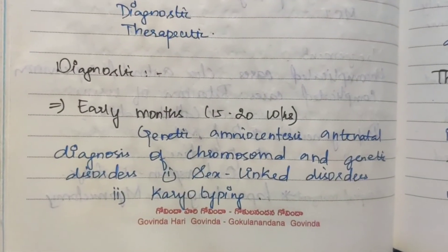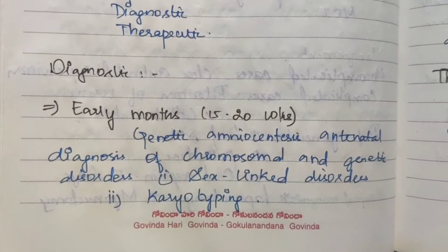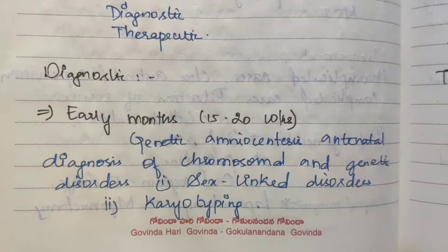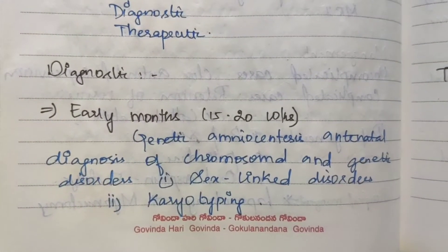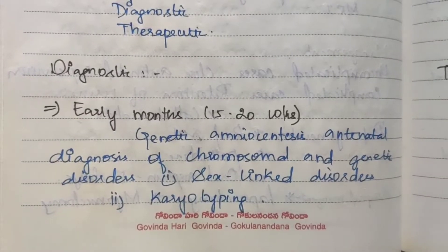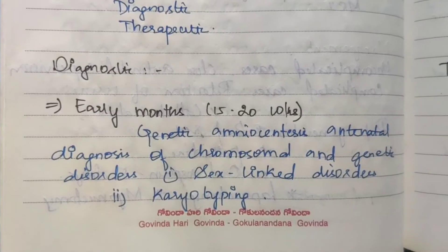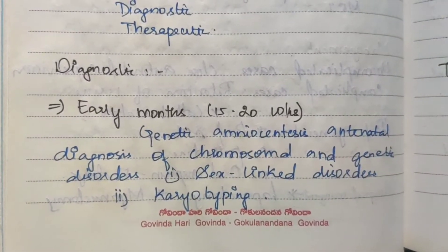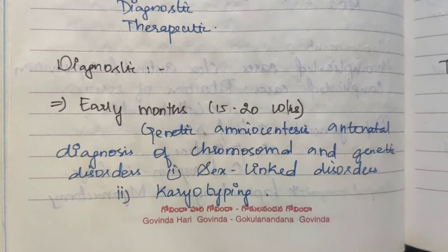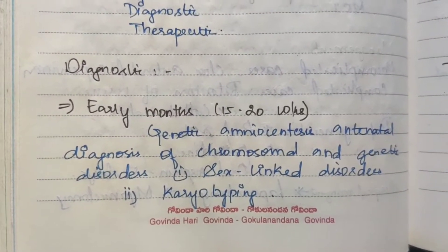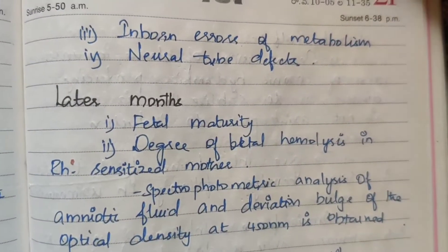The first indication is diagnostic purpose — to find out something. In early months, that is 15 to 20 weeks, genetic amniocentesis allows antenatal diagnosis of chromosomal and genetic disorders affecting the fetus. Examples include sex-linked disorders, karyotyping, inborn errors of metabolism, and neural tube defects.